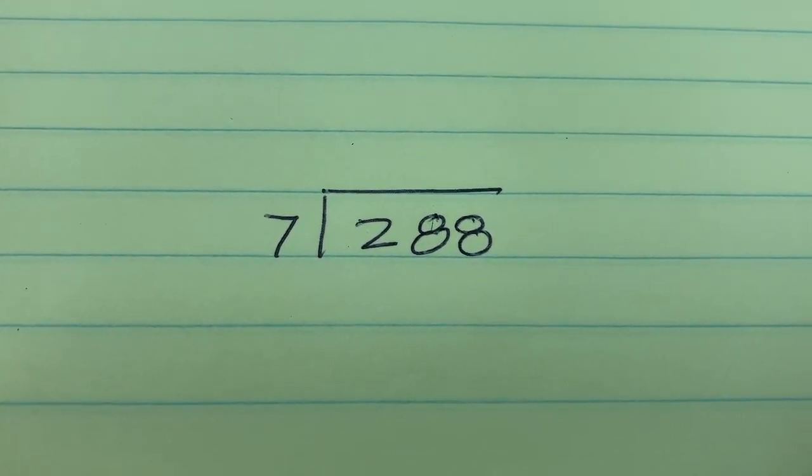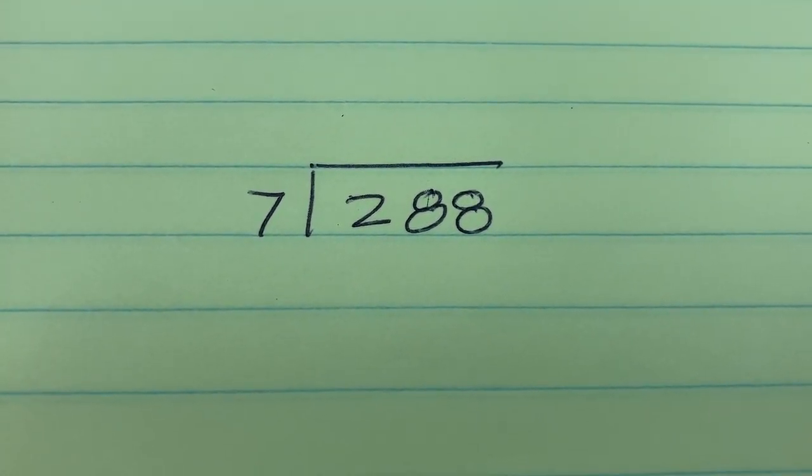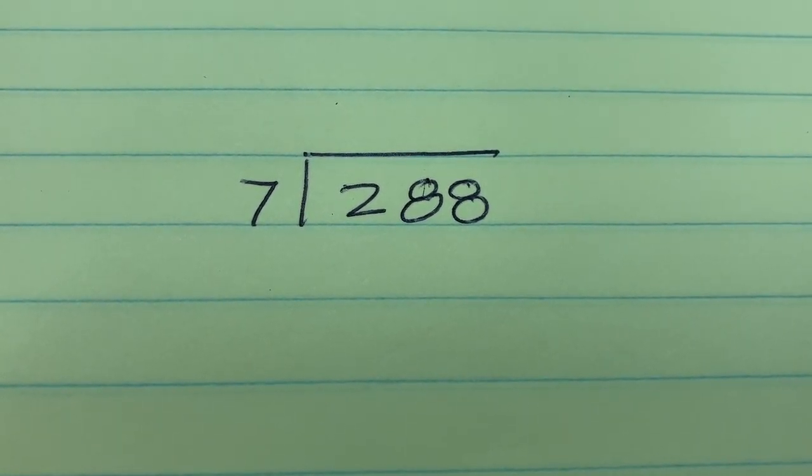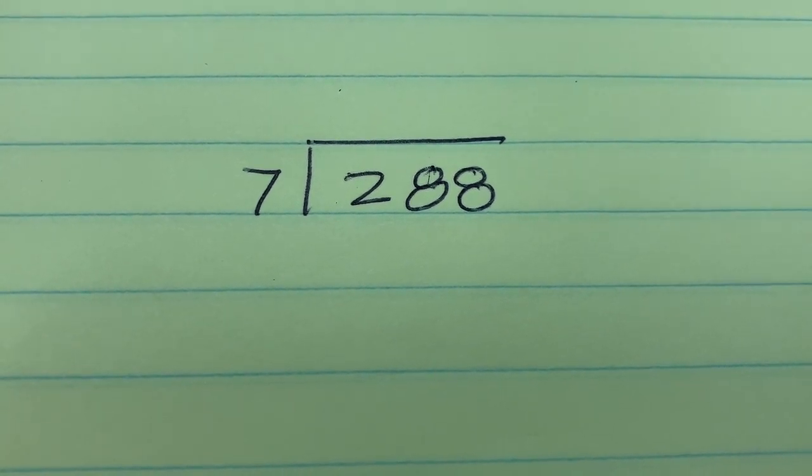All right, this time let's do something a little more interesting. How about 288 divided by 7? So step 1 was to write it down, and step 2 will be to do the division on a calculator. Let's see what we get.